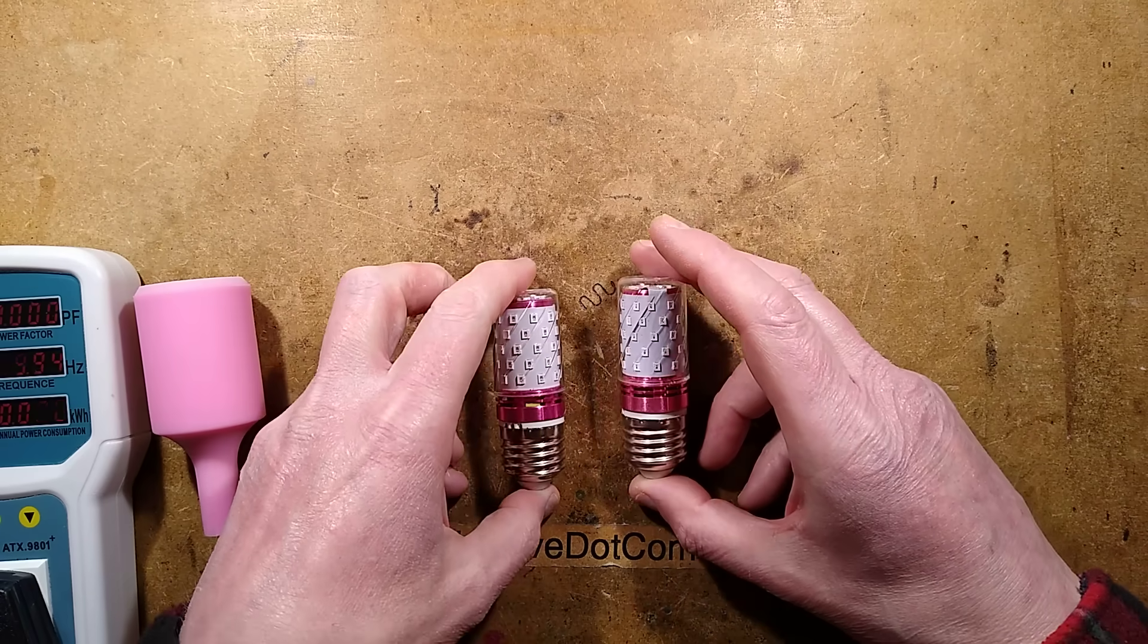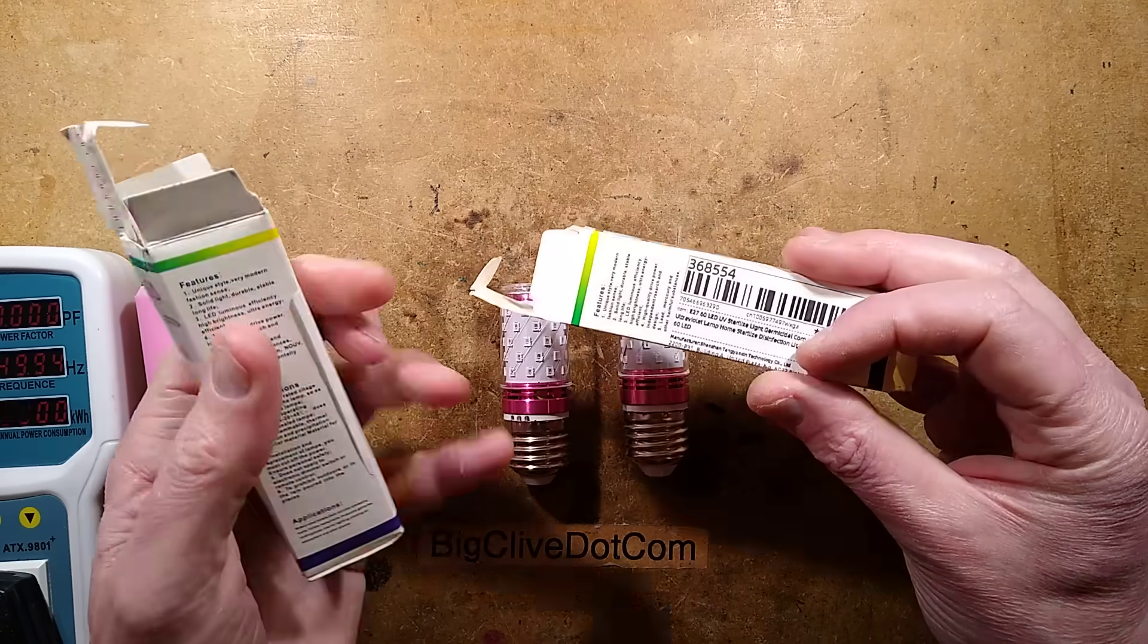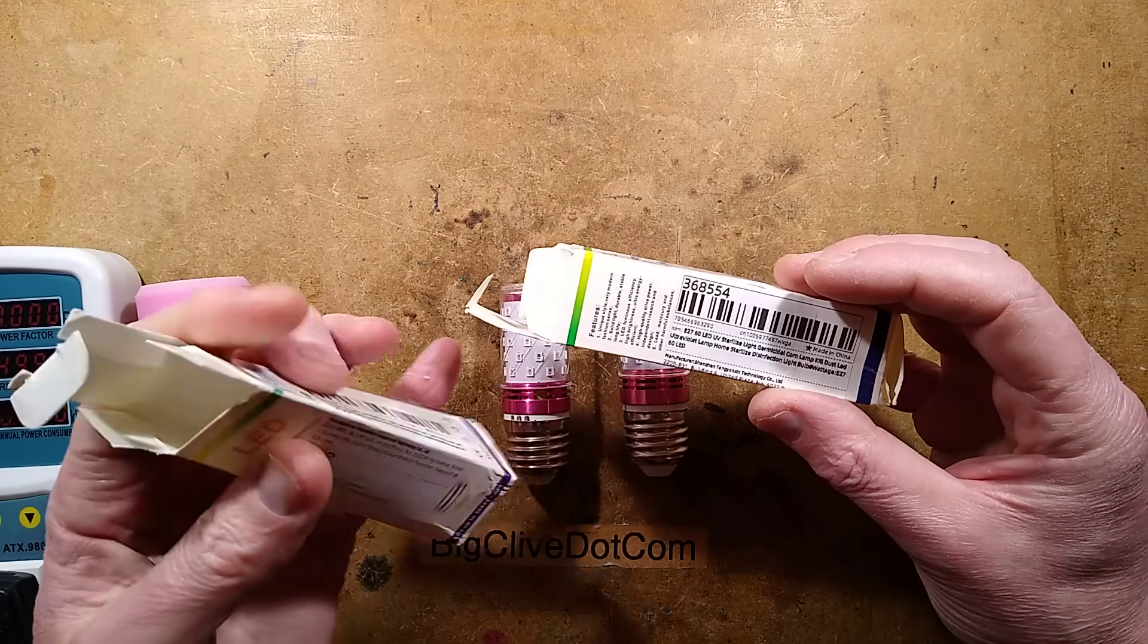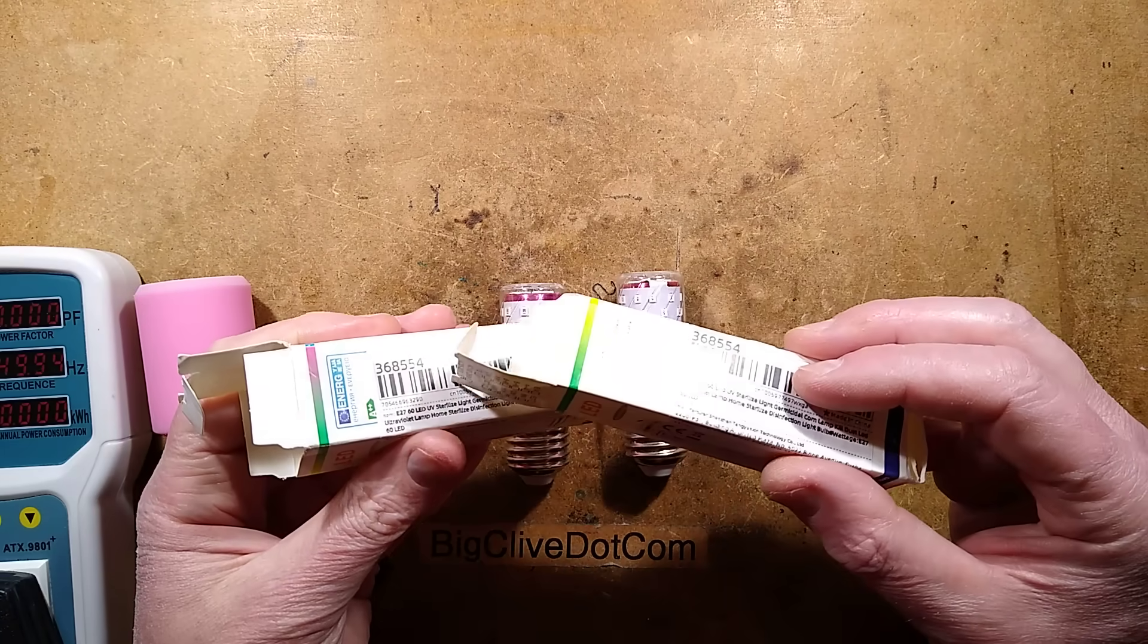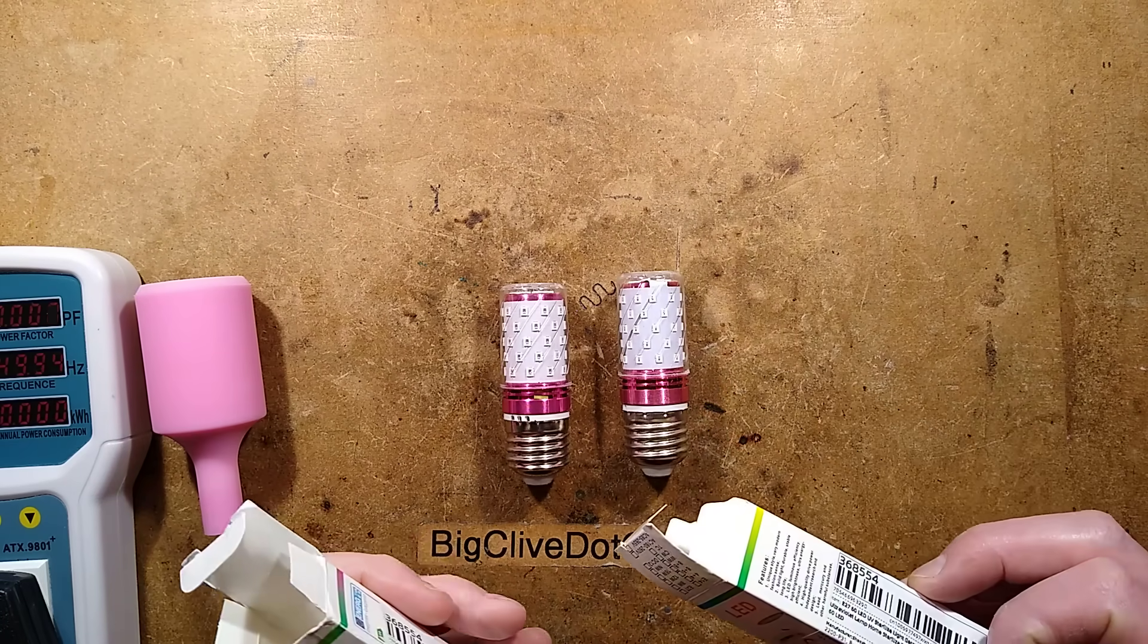So these two bulbs were bought separately. It turns out they have both got the same codes on them. Number 368554, 368554, but they're different. The LEDs are different and the power ratings are different.